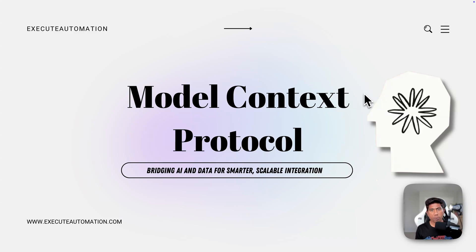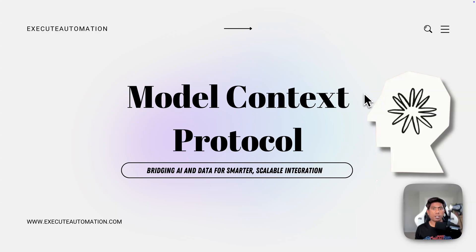Ever wondered that the data we have within our machine — like the file system, Google Drive, Slack, or GitHub — needs to be fine-tuned to get real-time information out of it using a large language model? So how do we actually do that? Welcome to the all-new Model Context Protocol from Claude Anthropic, released just a couple of hours ago, which promises to bridge the gap between AI and the data we have within our machine.